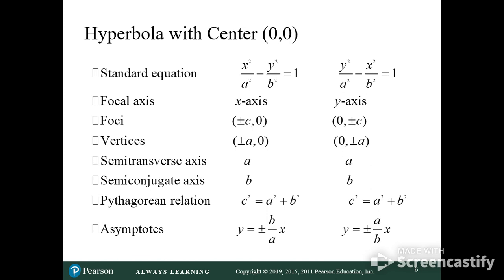So instead of an ellipse which has a plus sign here, it'll have a minus sign. Left right hyperbola, up down hyperbola. C squared equals a squared plus b squared, and you will have asymptotes. It'll be at plus or minus b over a and plus or minus a over b.